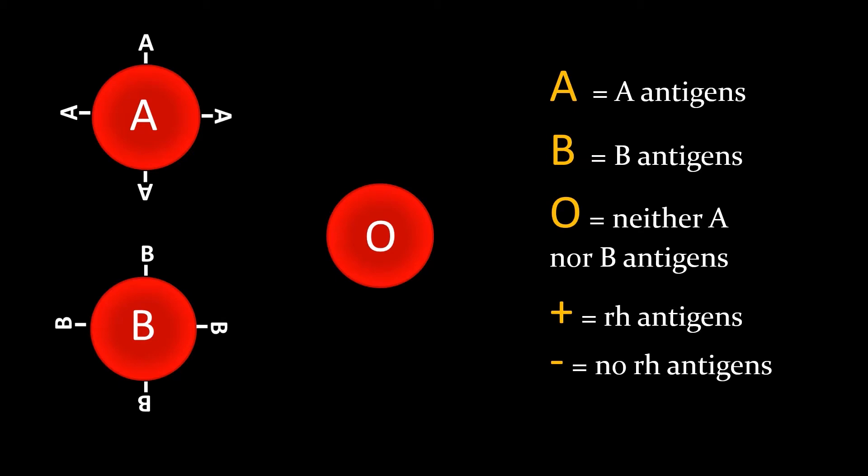All of these blood types here, because they do not have RH, would be negative: A negative, B negative, and O negative. If we give it an RH, now it is positive, so that would be A positive.